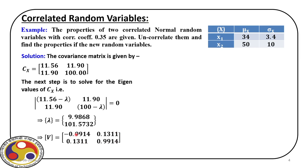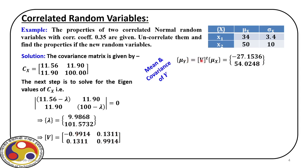Using the eigenvector matrix V, we find the mean and covariance of y. The mean of y equals V transpose times the mean of x, giving values of minus 27.1536 and 54.0248. The variance of y is found using Cy equals V transpose times Cx times V, and this matrix has values only on the leading diagonal because in the y space the variables are uncorrelated — the off-diagonal terms are zero.